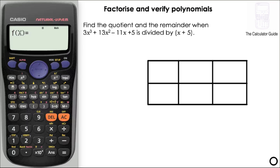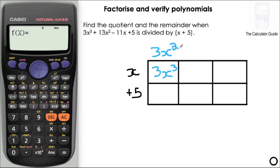Let's have a go at our last question. Find the quotient and the remainder when 3x cubed plus 13x squared minus 11x plus 5 is divided by x plus 5. This time we're expecting a remainder. We still have three columns for x cubed as our highest power, and two rows for the divisor x plus 5. First term 3x cubed: what do I need to multiply x by to give 3x cubed? That's 3x squared — so the first part of the quotient is 3x squared. Multiplying by 5 gives 15x squared.